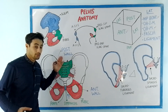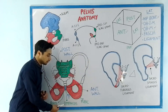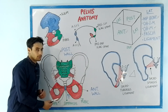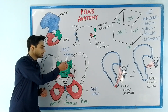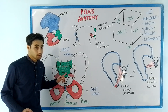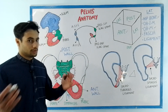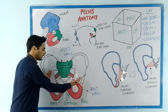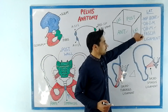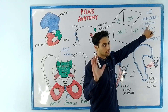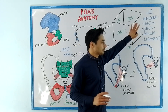Have a look at this diagram which represents the anterior and the posterior wall. The anterior wall is formed by the pubic bone along with the symphysis pubis and the ischiopubic rami, shown in red. The posterior wall is formed by the sacrum bone along with the coccyx and the piriformis muscle on both sides, shown in green. Now we're left with the lateral wall, which is formed by the hip bone, the obturator internus muscle, the obturator membrane along with fascia and some ligaments.